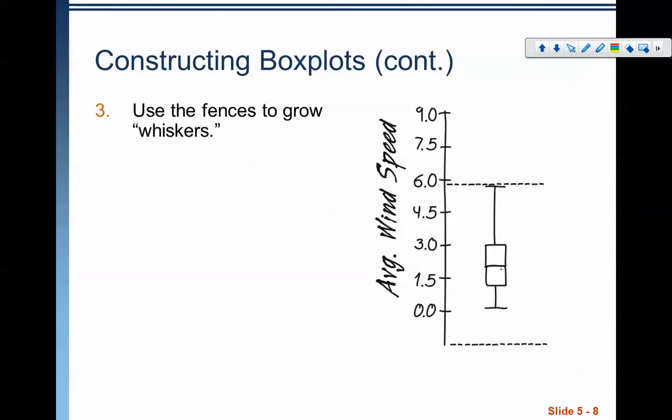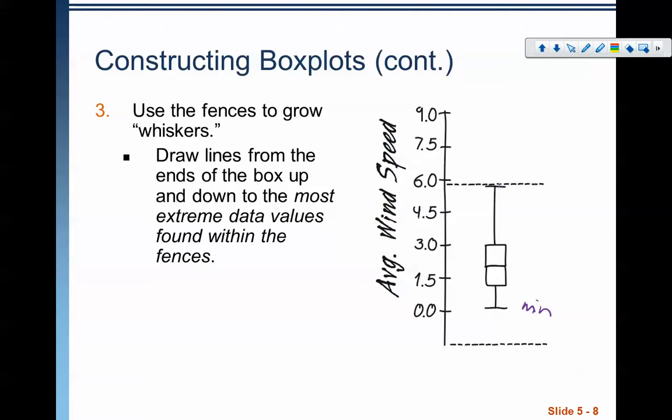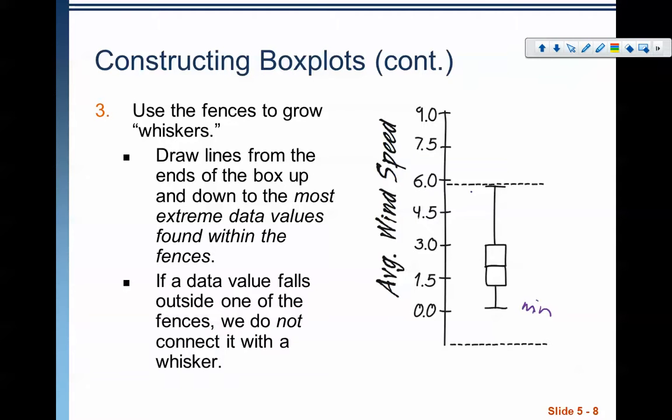So we use the fences to draw the whiskers. This one down here goes to the minimum. Notice that it doesn't cross the fence. Now if you remember the data, we had an 8.9 something. So typically that would go way up here, but the whisker only goes to the fence. So the fence is here, so that's where we draw the whisker to. It does not include outliers.